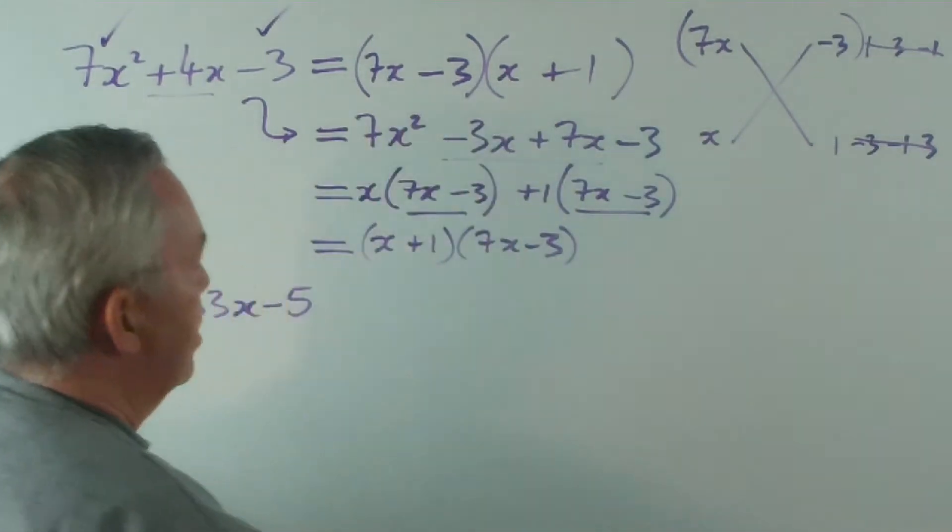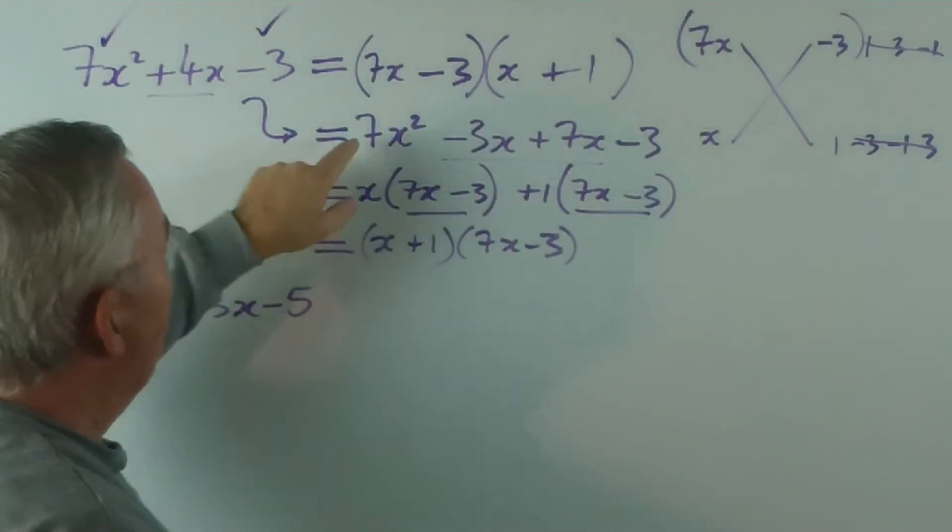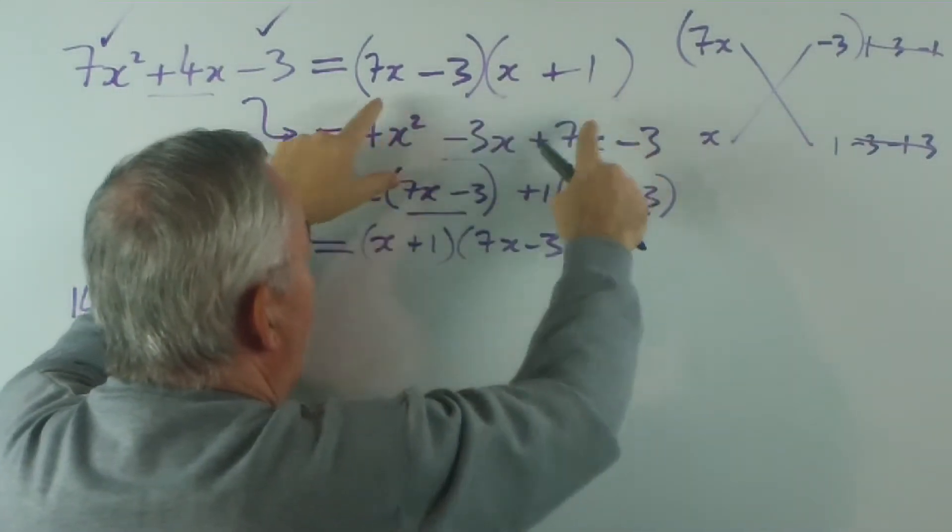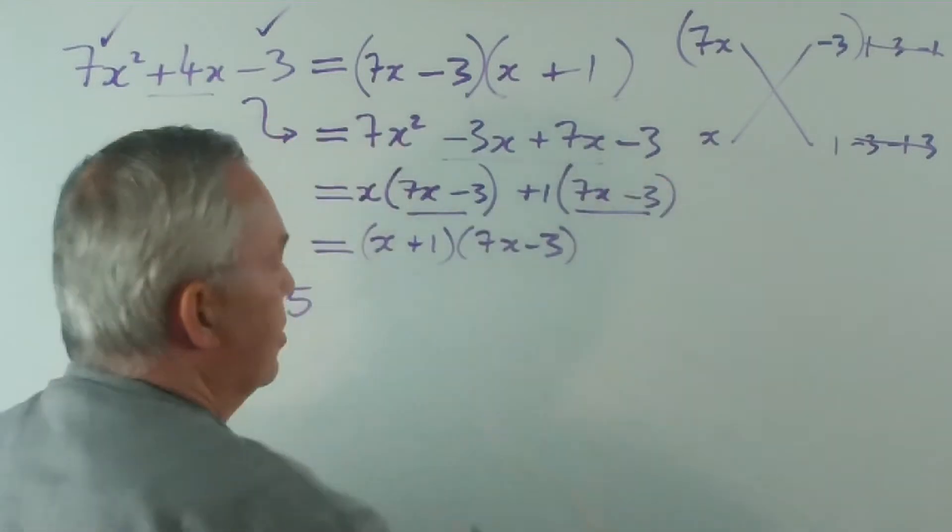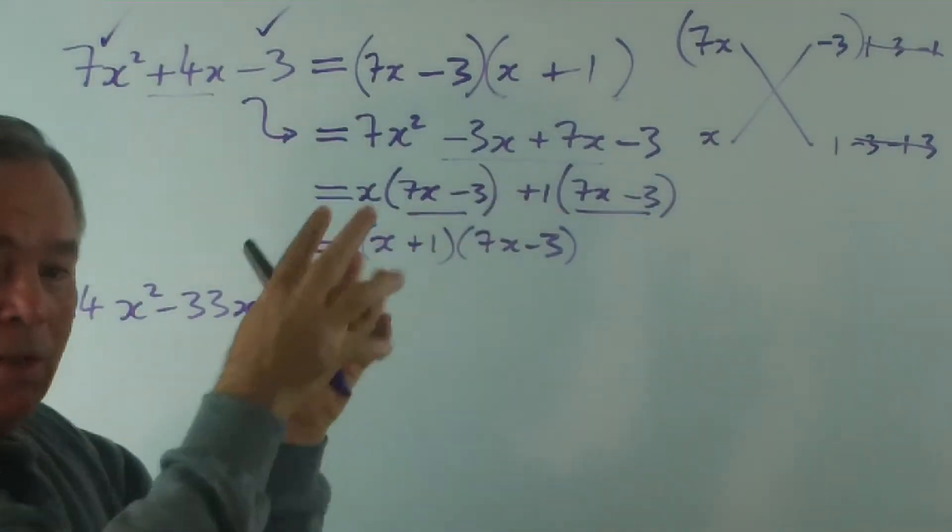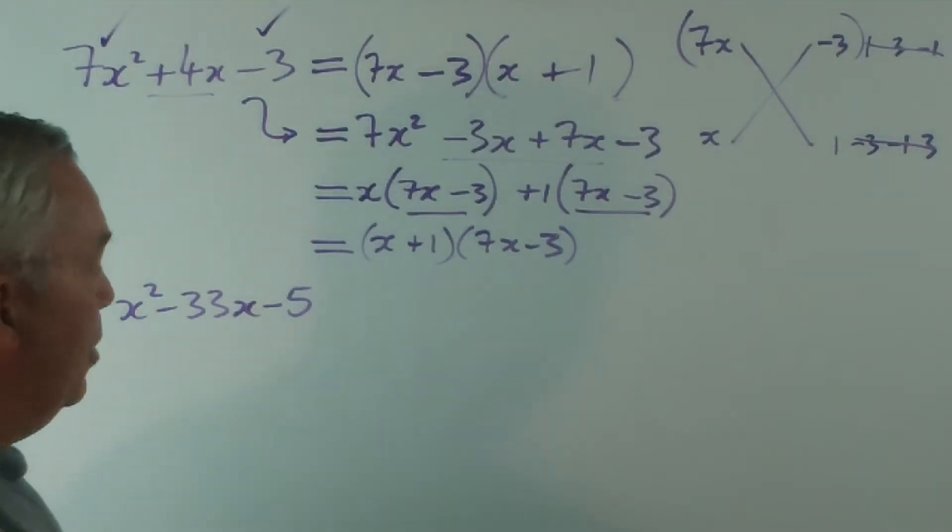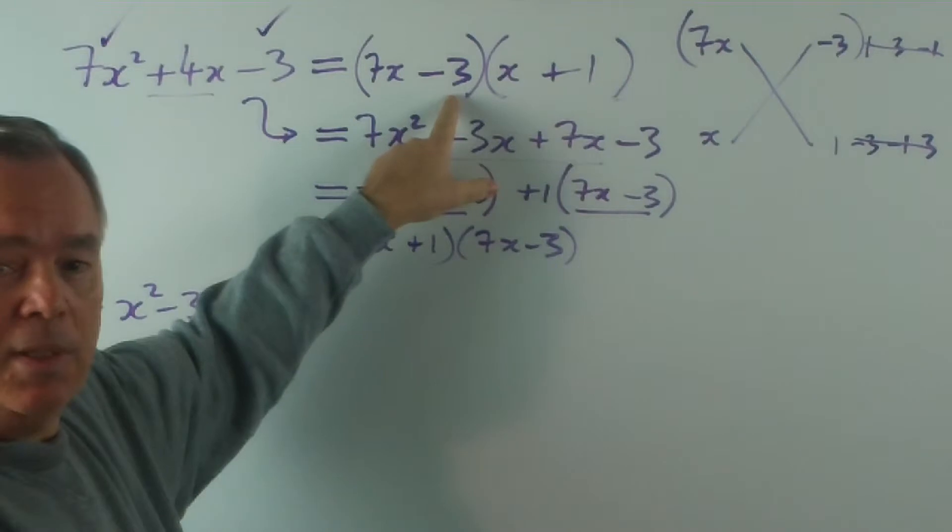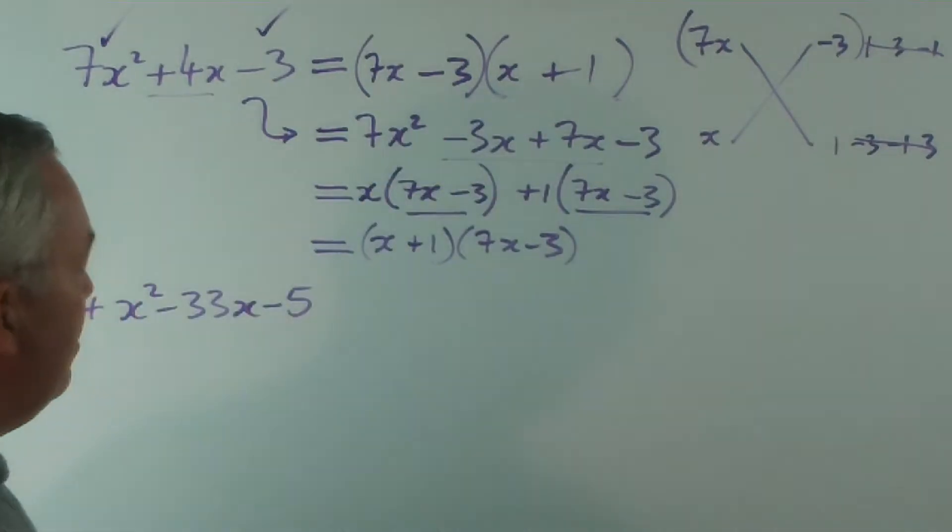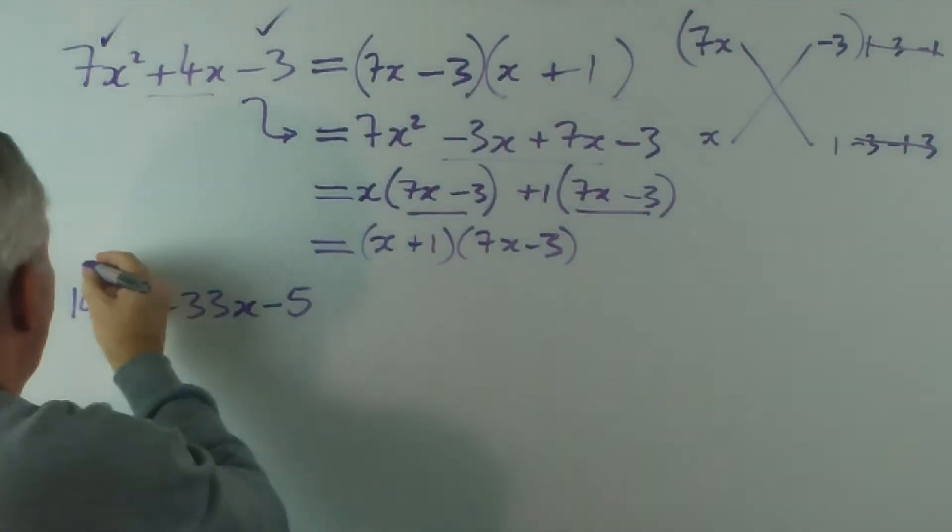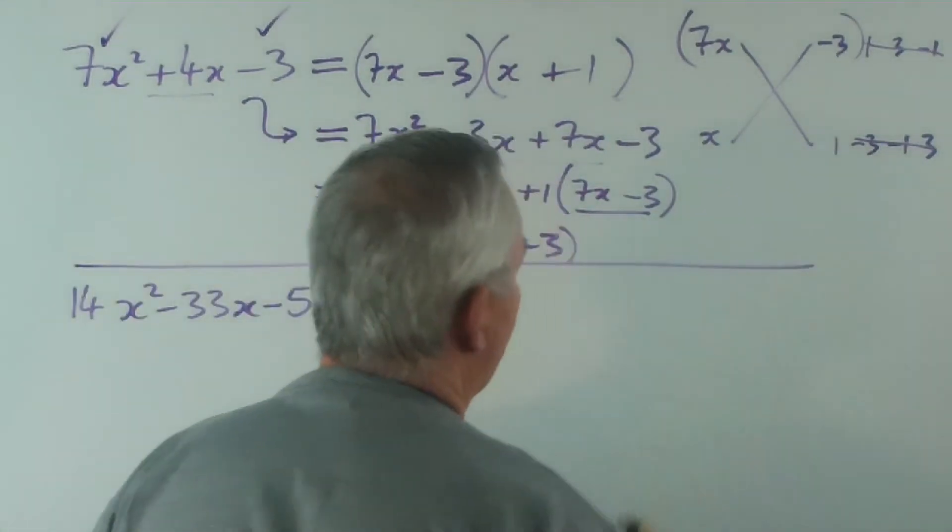The order really doesn't matter. So, x plus 1 times 7x minus 3. Some like to go straight to this binomial product form. And some like to go through the process of factorizing like that. It really doesn't matter. The cross helps you unlock both. Personally, I prefer just going to this. I like speed. But some people like the process and they like to be confident that they've factorized it properly. So, that's entirely a matter of personal preference.